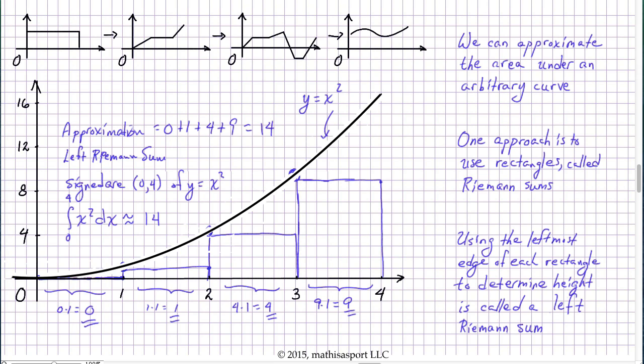Okay, I hope you took the time to pause the video and teach. Let me just try to sum up that there are many potential ways we could work to approximate the area under an arbitrary curve. But one approach is to use rectangles. This is going to prove very useful down the road. These sums of rectangles have a special name. They're called Riemann sums.